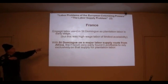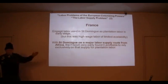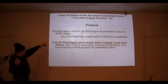Haiti and the Dominican Republic were on the supply route direct from Africa, given the way the currents came.